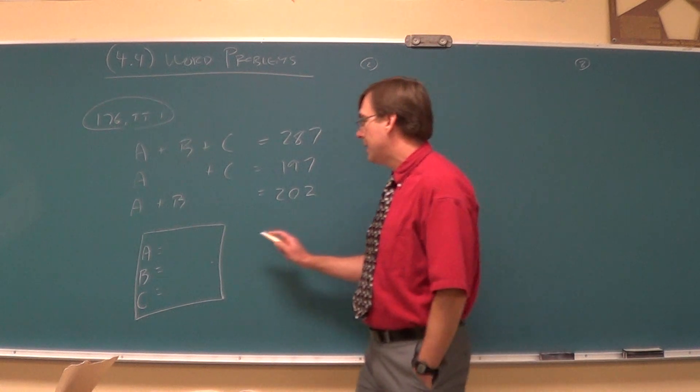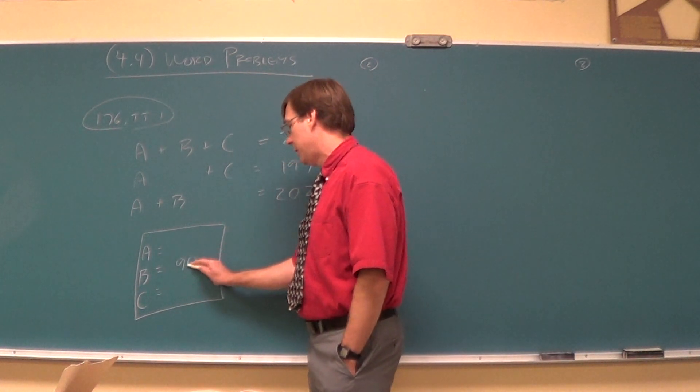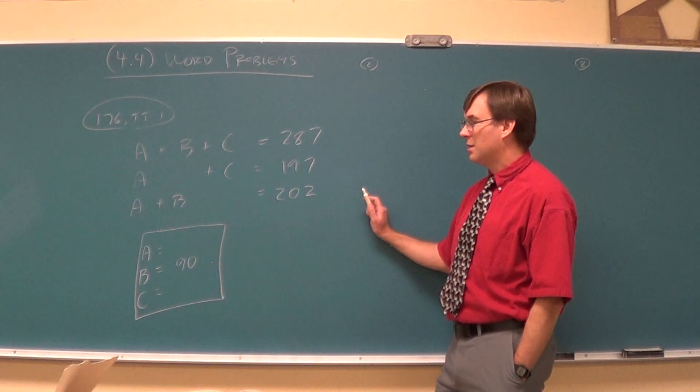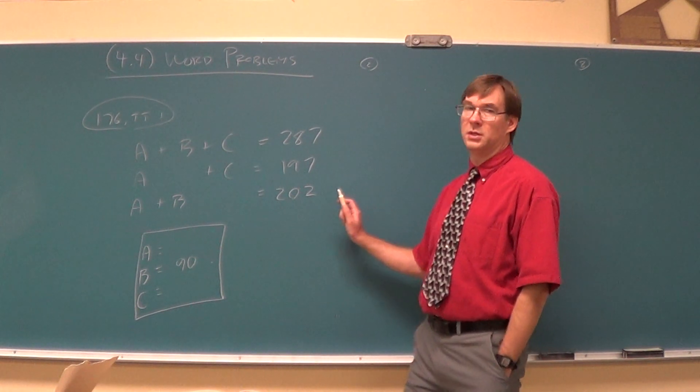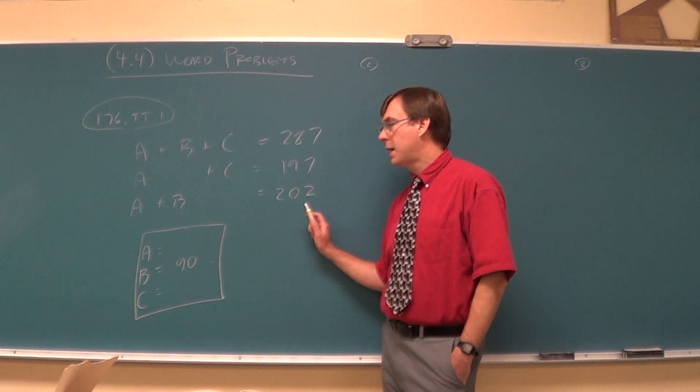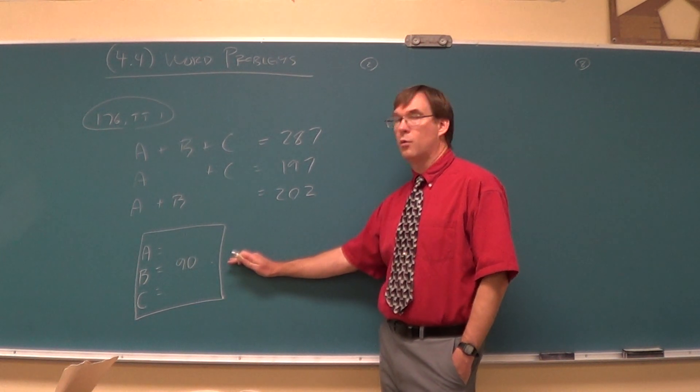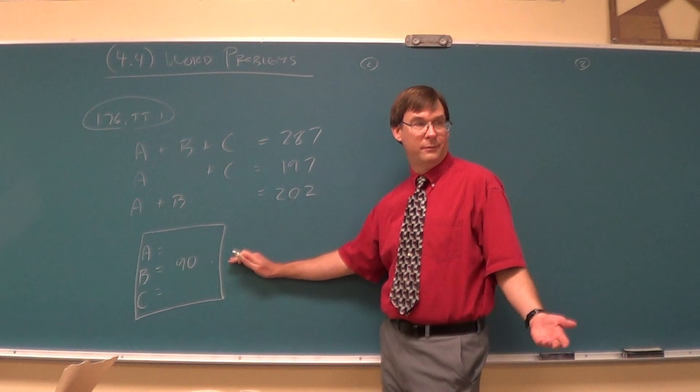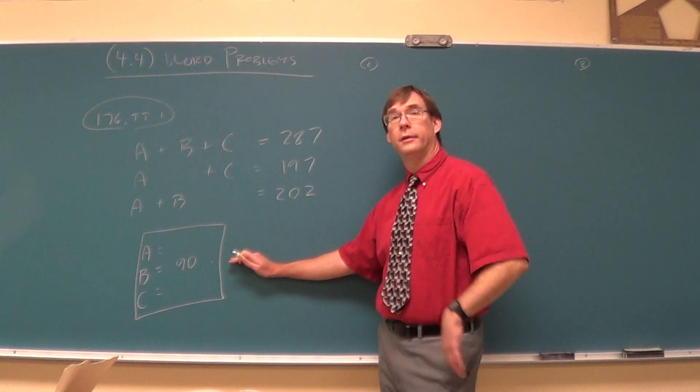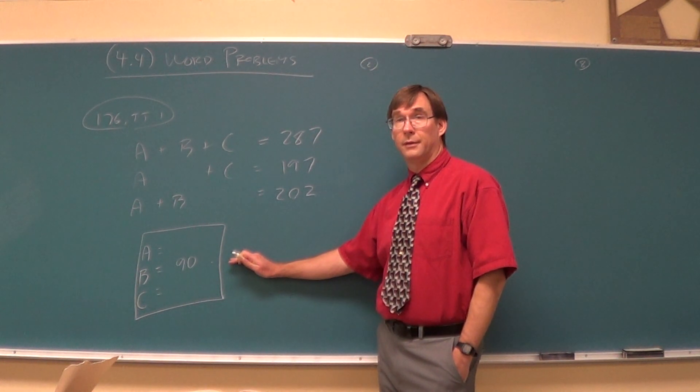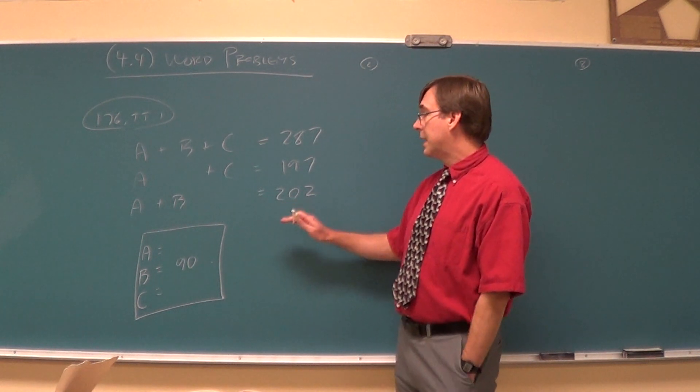B is 90. You can very quickly figure out that B would have to be 90, not so much by Algebra 2, but just by, oh yeah, that has to be 90. Can somebody explain where that 90 just came from? It's the one that's 287 and then the one that's 197, and it's just a single B so you subtract.